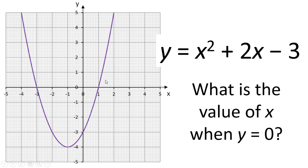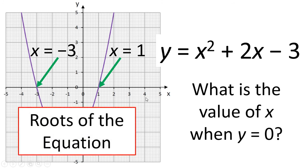The first thing that we're going to think about is what is the value of x when y equals 0. So we can see this from the graph. x equals minus 3 and x equals 1 when y equals 0. These points on the graph are referred to as the roots of the equation. So for this particular quadratic, x equals minus 3 and x equals 1, they're the two roots for this equation.